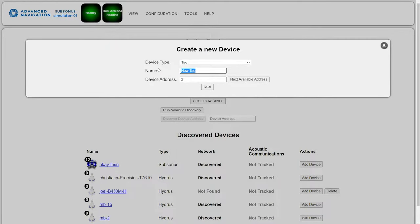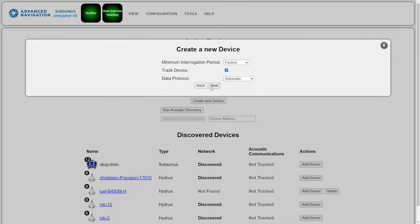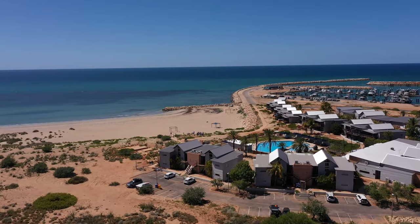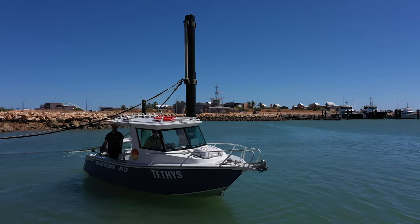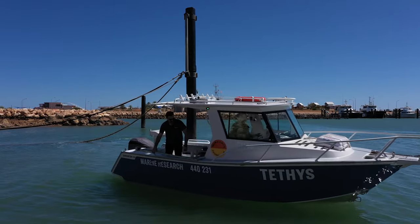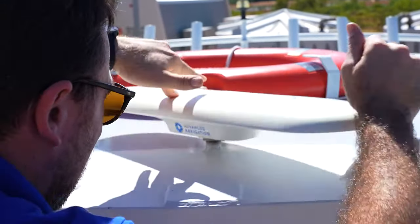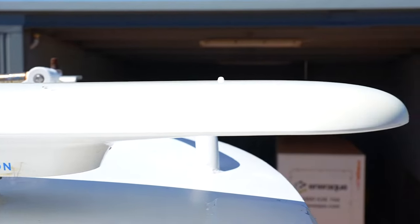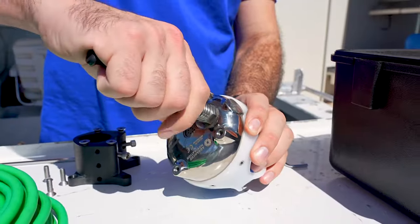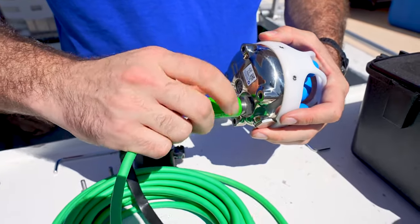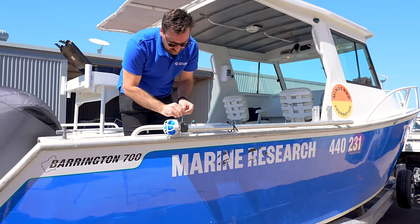Installation on a vessel is made simple. Firstly, Subsonus requires an absolute positioning and timing source. In this case we're using an Advanced Navigation GNSS compass, however other similar systems can be used. Take the Subsonus with the vertical connector, connect the subsea cable to it, and attach it to an over-the-side pole using the